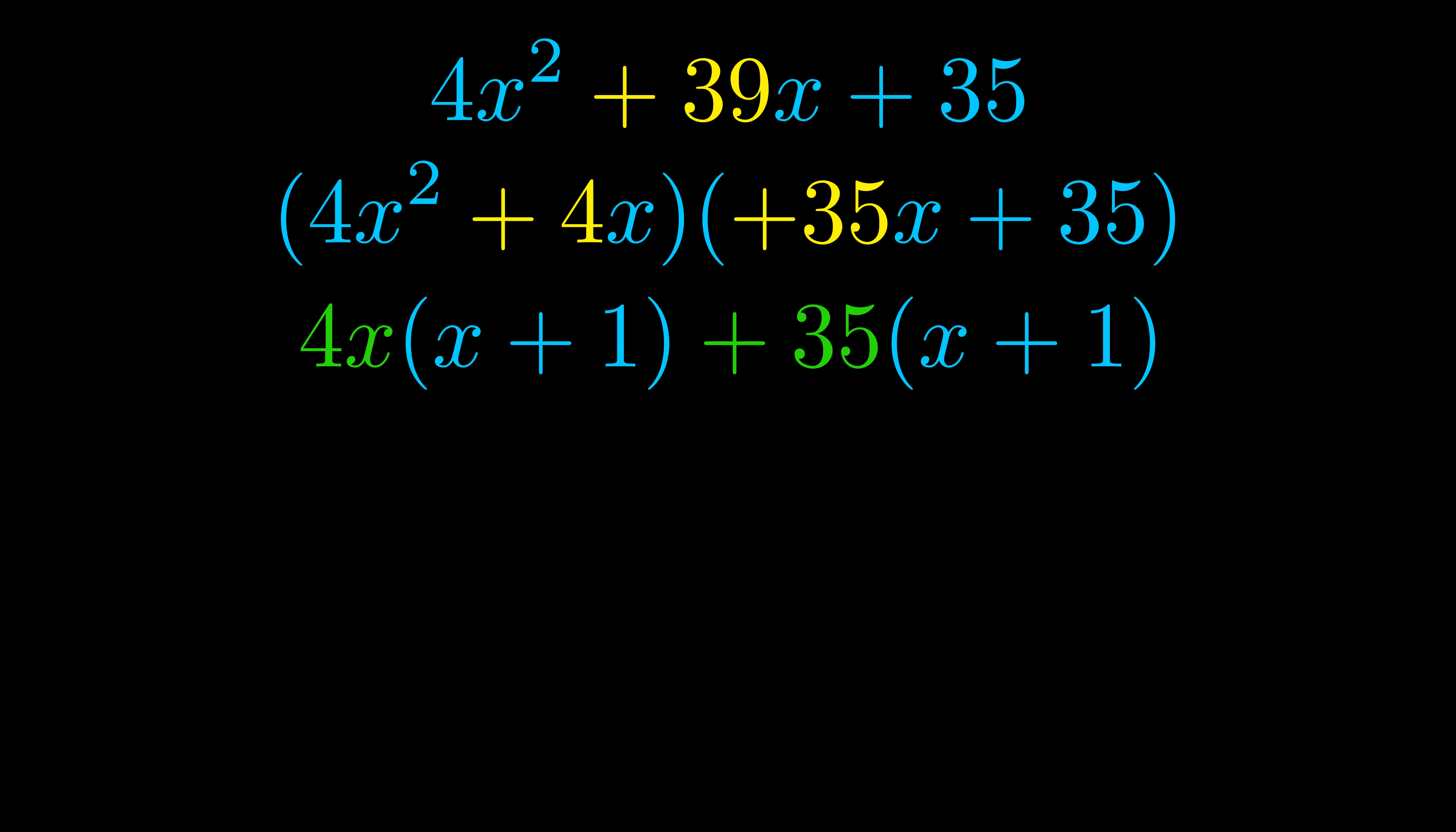Notice also how what remains inside of the parentheses is the same in both cases. The blue values are the same. Those blue values will become one of our factors, and we will combine the two green values, the GCFs that we pulled out, to get the other one. And that is our fully factored equation.